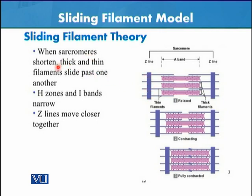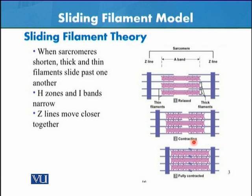When the sarcomere shortens, thick and thin filaments slide past each other. They don't contract by themselves, but when many sarcomeres collectively shorten, the overall muscle fiber also shortens. The H zone and I band narrow. This is because the actin filaments slide past each other on both sides, which is why we call it the sliding filament theory or model.